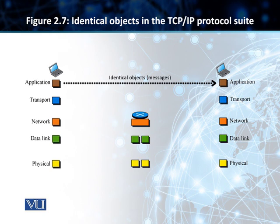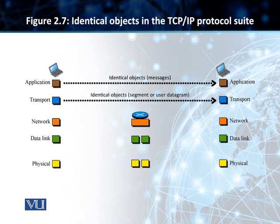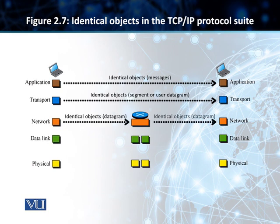At the application layer, our object is a message — both on the source and destination side. At the transport layer, our object is going to be a segment or a user datagram. At the network layer, we are going to have similar objects once again, and they are called datagrams.